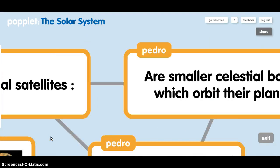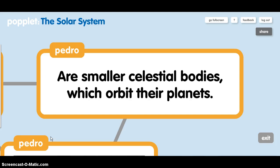Natural satellites. There are smaller celestial bodies which orbit their planets.